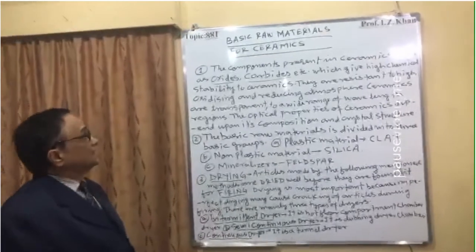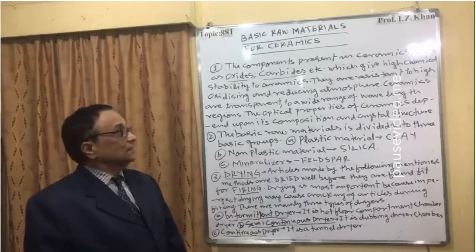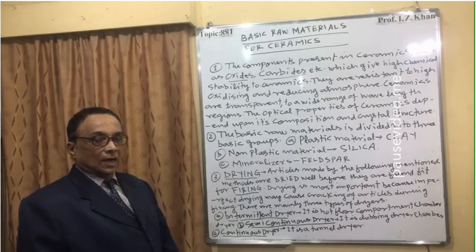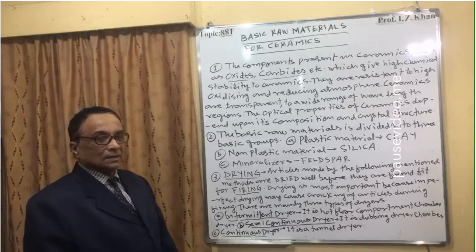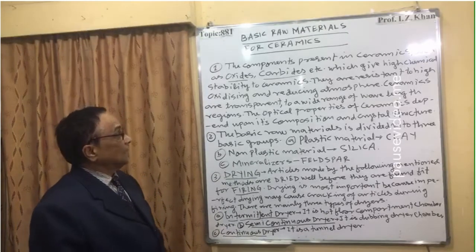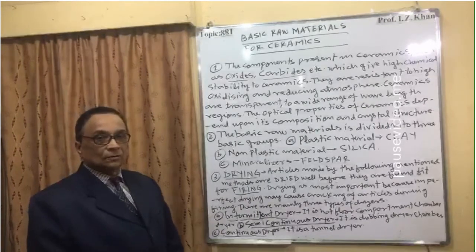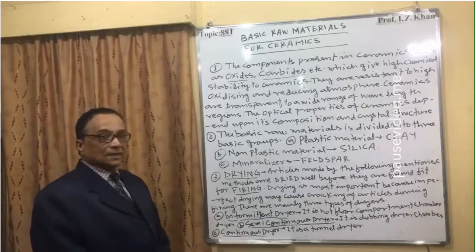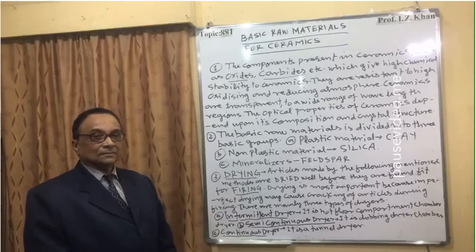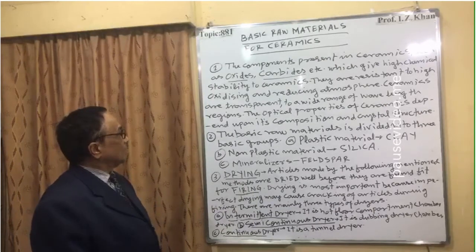The components present in ceramics — such as oxides and carbides — are very important. They provide the hard, rigid structure and give high chemical stability to ceramics. Ceramics are resistant to high oxidizing and reducing atmospheres; oxidation and reduction by air and atmosphere is drastically reduced because of the presence of carbides and oxides.